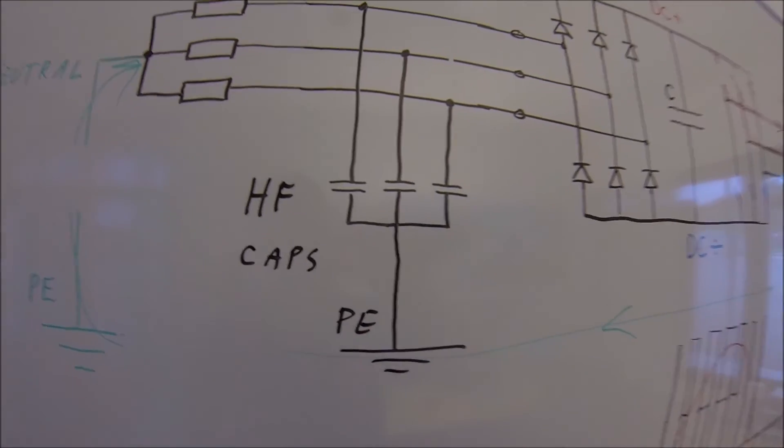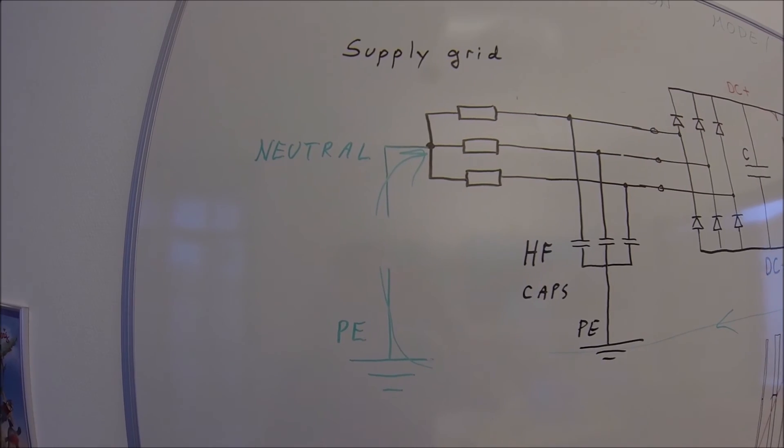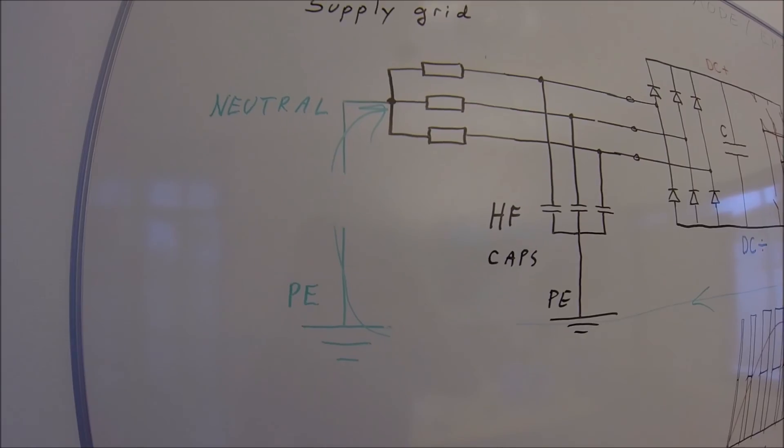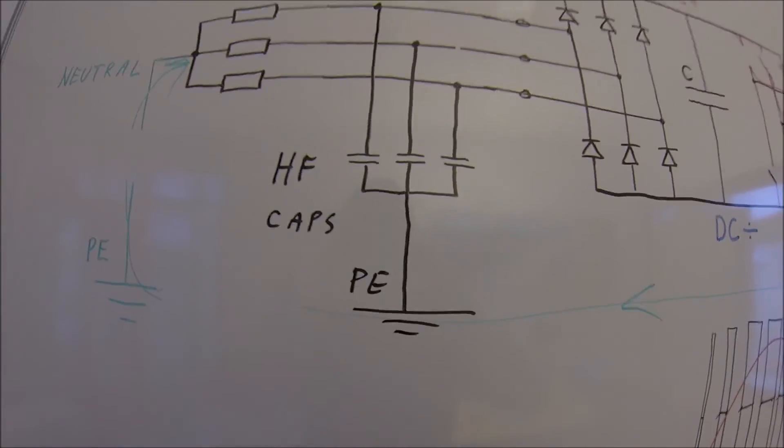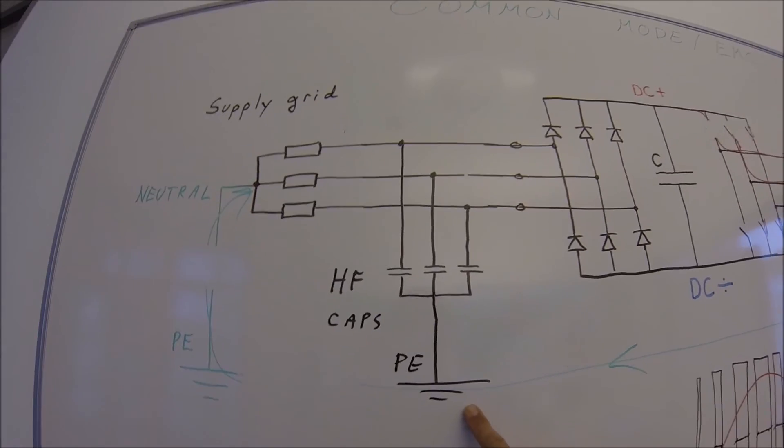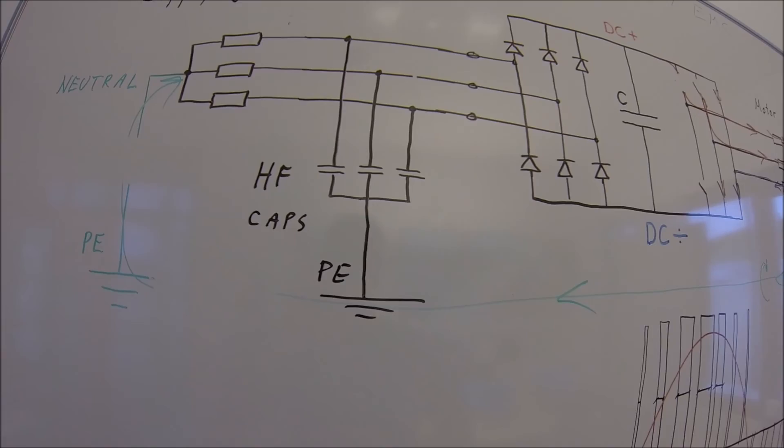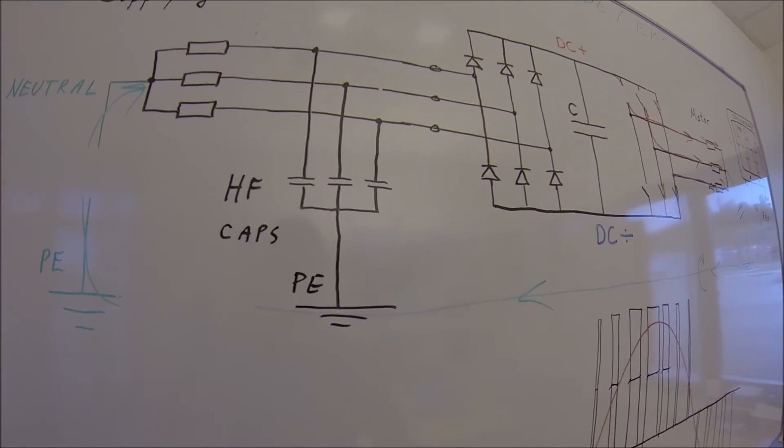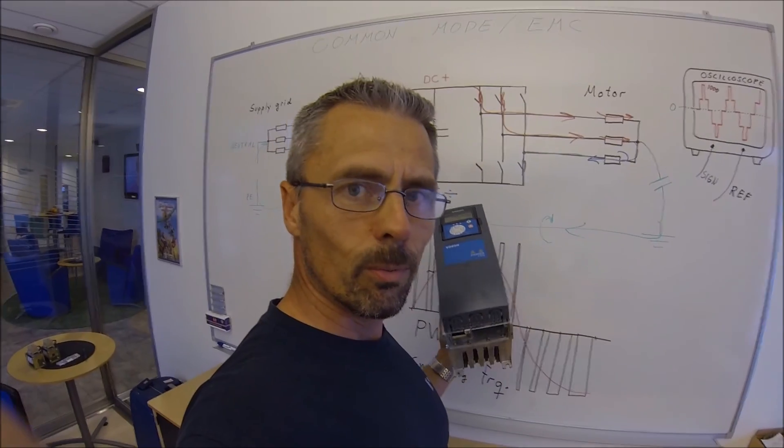The high frequency caps can be used when you have a grounded system like in buildings on shore, when you have TNS and TN kind of supply grids, but on board ships, this might be a problem because the ground is floating. You have a so-called IT power system. Then you are not allowed to use these HF caps directly to the protective earth. So it's a little bit different between onshore installations and offshore installations in maritime industry. Thank you for watching.